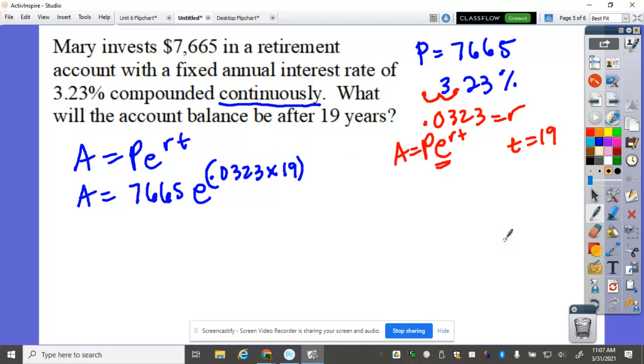So using our calculator, 7,665, second LN, or second division sign, then raised to the power of 0.0323 times 19.